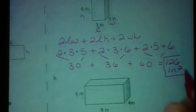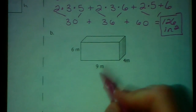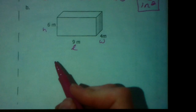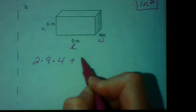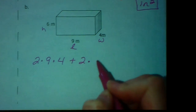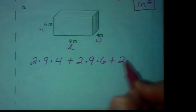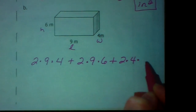You end up with 126 inches squared. That is the surface area of that rectangular prism. For the next example, label length, width, and height as L, W, H, and plug them into the formula: 2 times 9 times 4, plus 2 times 9 times 6, plus 2 times the width times the height, which is 6.